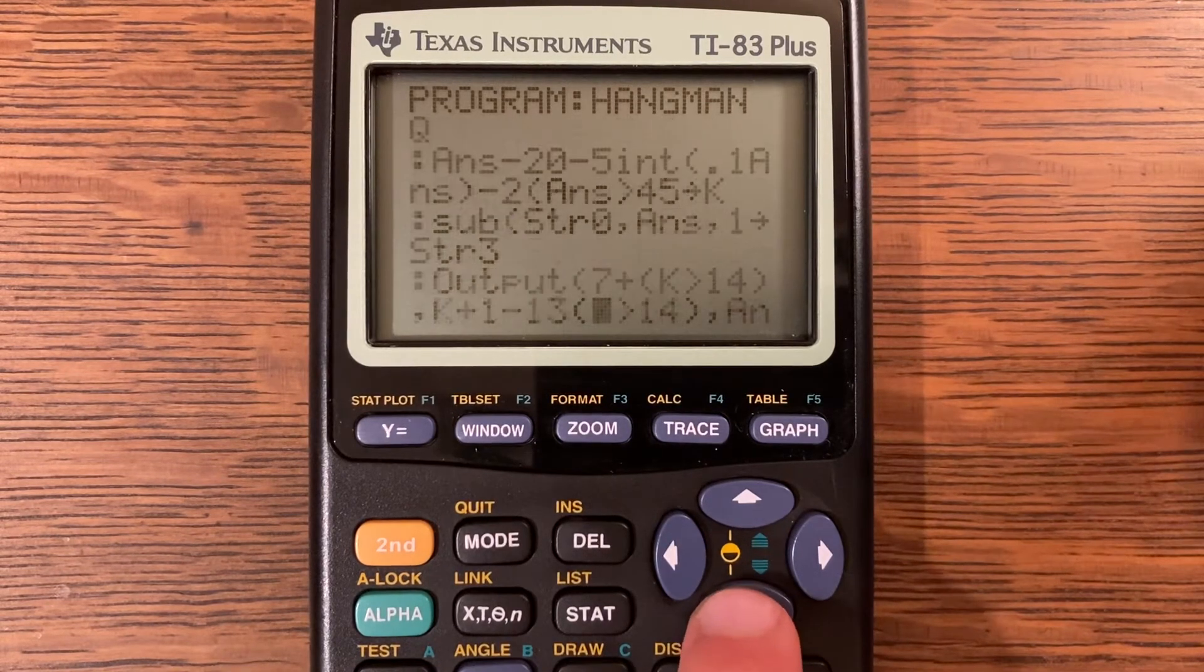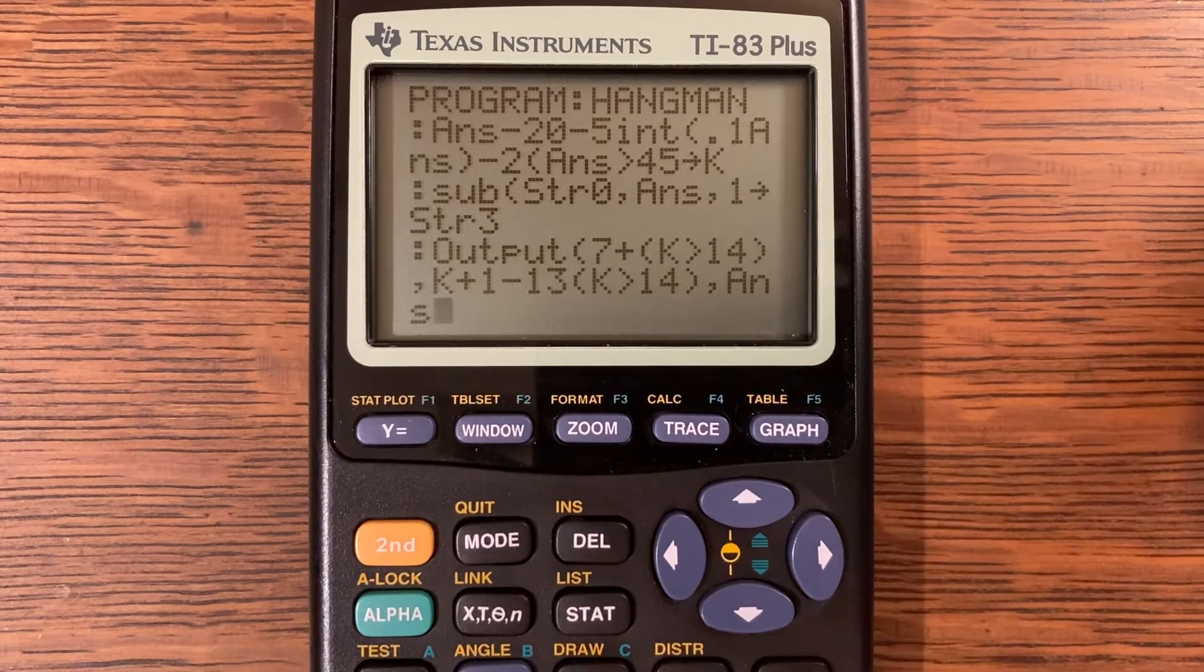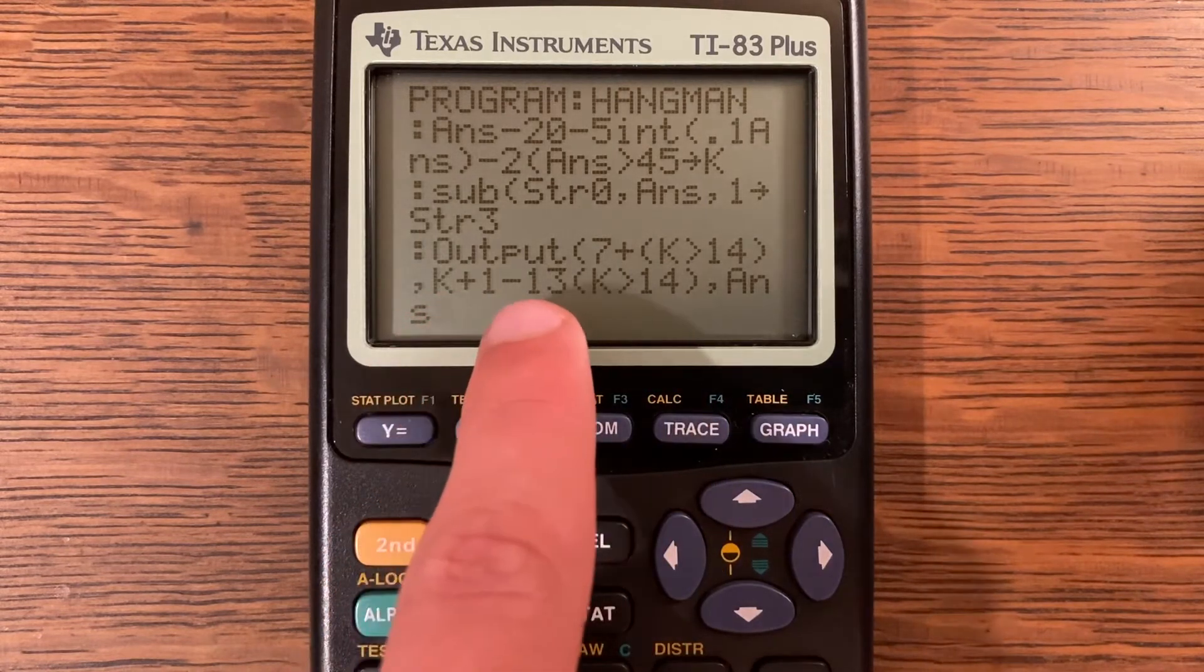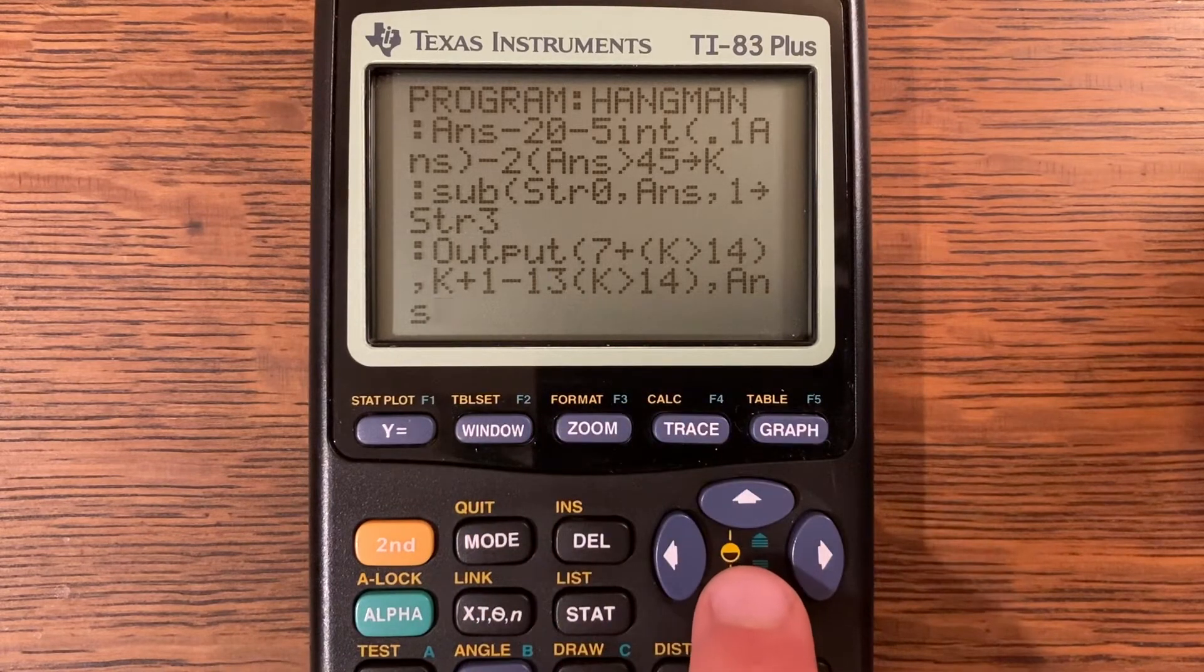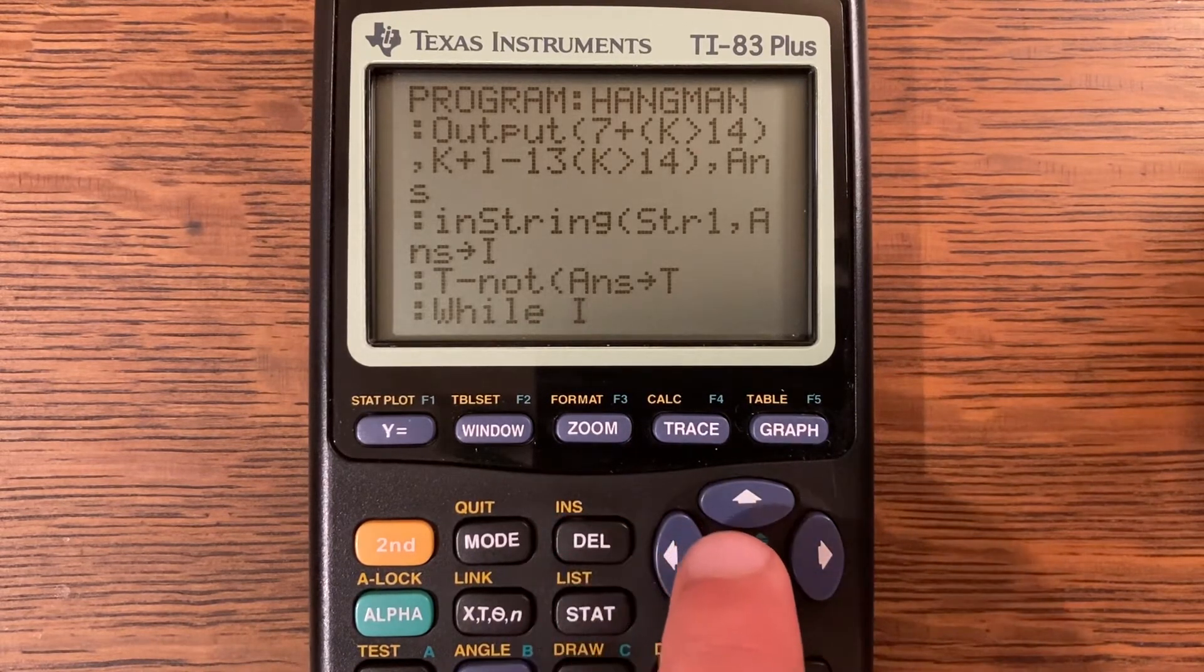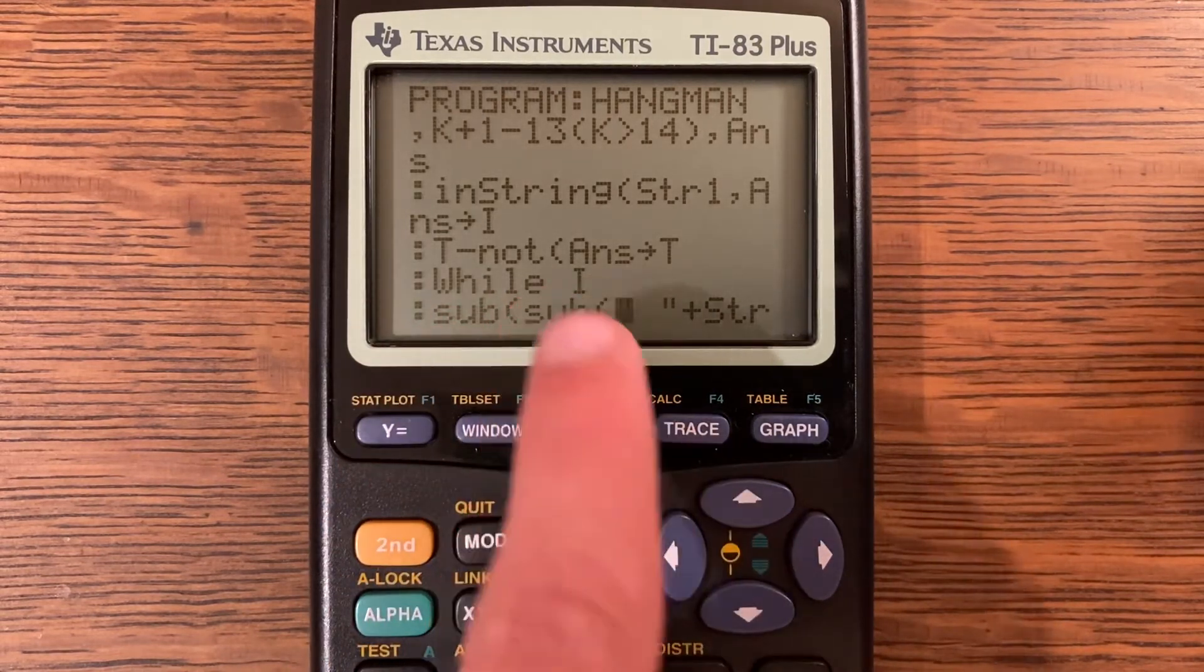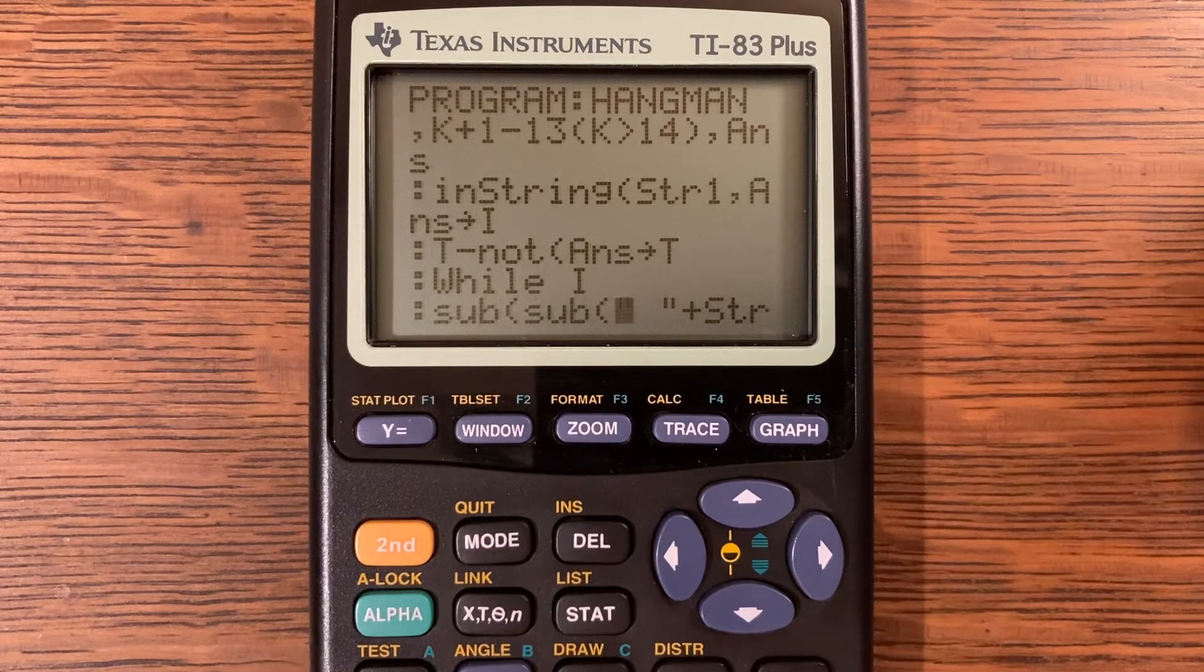Sub string 0 comma answer comma 1 store into string 3. Output at 7 plus k is greater than 14, so 7 plus 1 if k is greater than 14, and then comma k plus 1 minus 13, 15 multiplied by the fact that k is greater than 14 comma. Answer in string string 1 comma answer store into i. T minus not answer store into t, so t minus answer is not equal to 0 store into t. That is a very common way that programmers will do it. You'll do a not and then something. It is basically saying not equal to 0, so answer is not equal to 0 is what it means.